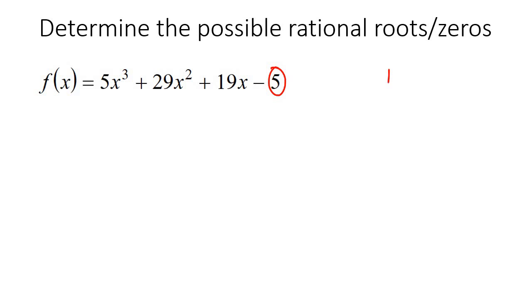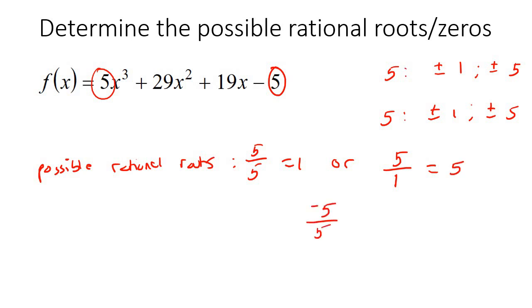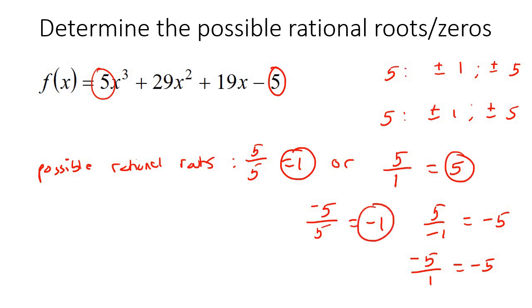Let's try another example. Take this number and find all of its factors — that's going to be plus or minus 1 and plus or minus 5. Then take the leading coefficient — same thing: plus or minus 1 and plus or minus 5. To work out all the possible rational roots, get all the different combinations. You could have positive 5 divided by positive 5, which is 1; or positive 5 divided by 1, which is 5; negative 5 over positive 5, which is negative 1; and 5 over negative 1, which is negative 5. So the possible rational roots would be 1, 5, negative 1, and negative 5.